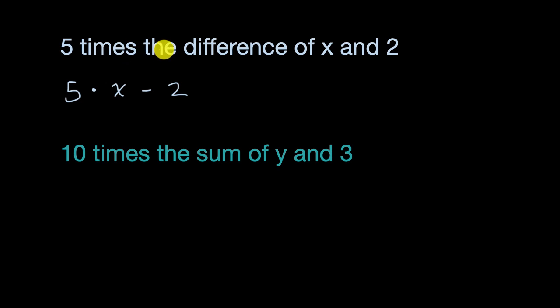It's five times, not x, but the difference of x and two. So what you need to do is put parentheses here to make sure that you take the difference of x and two first, and then multiply that by five.